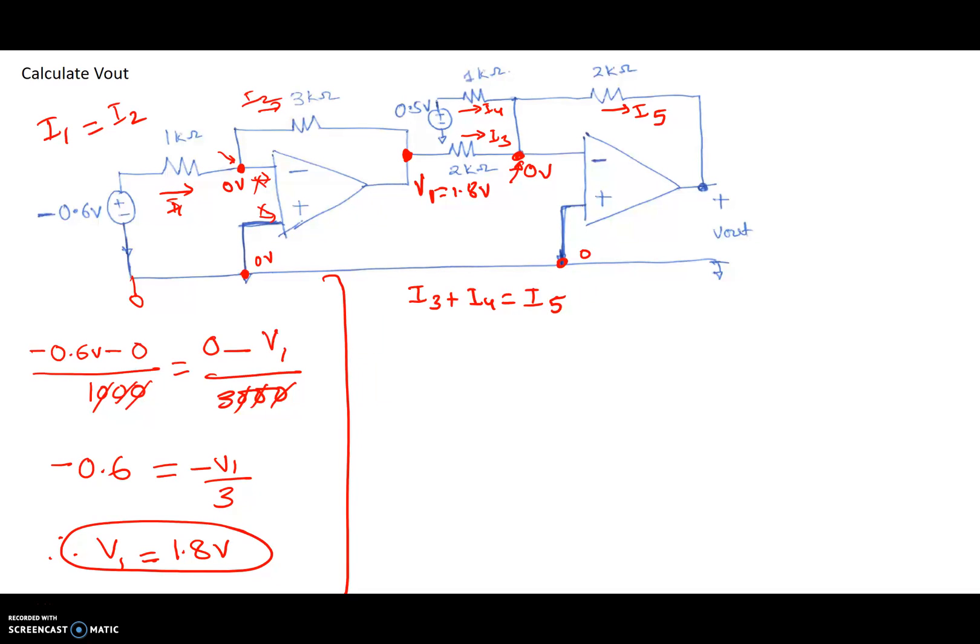I3 is 0.5 minus 0 divided by 1,000. I4 is 1.8 minus 0 divided by 2,000, and I5 is 0 minus V out, so minus V out, minus V out divided by 2,000.